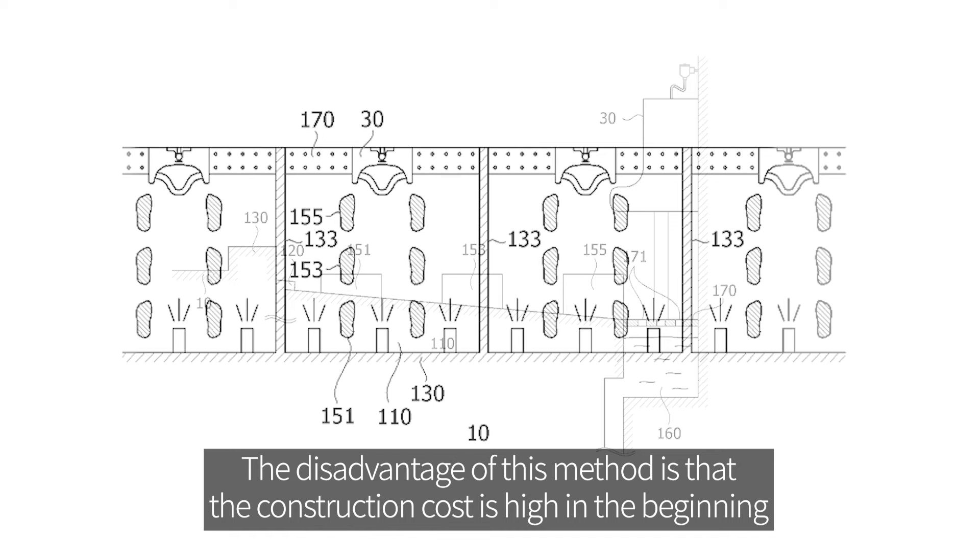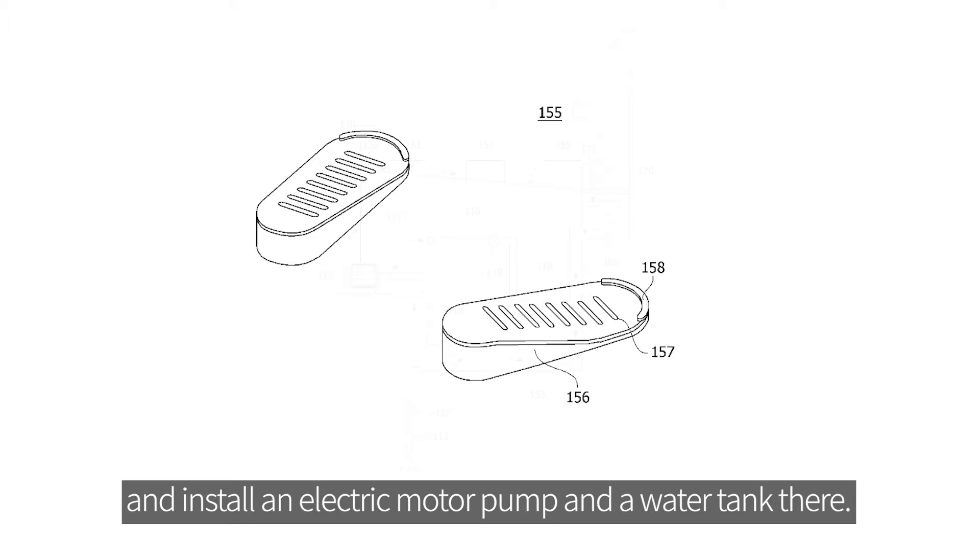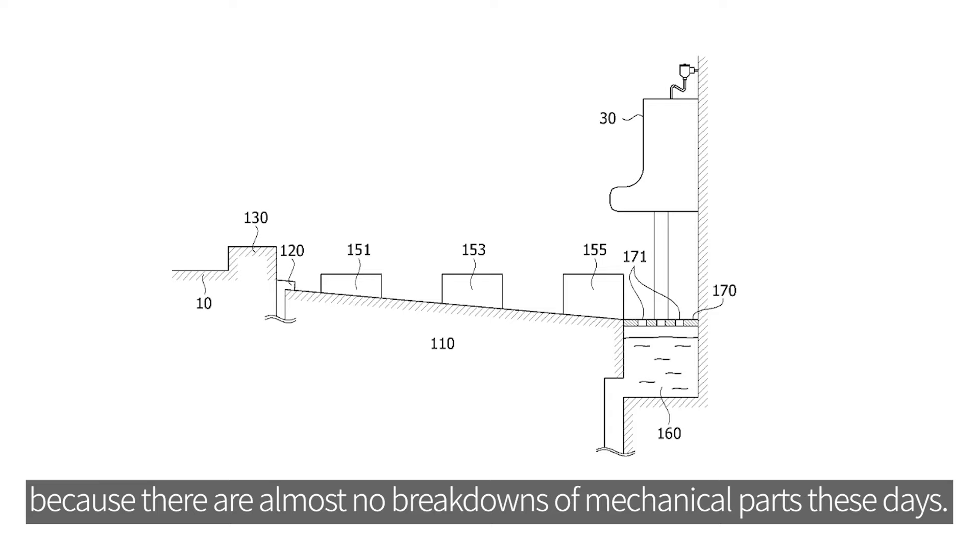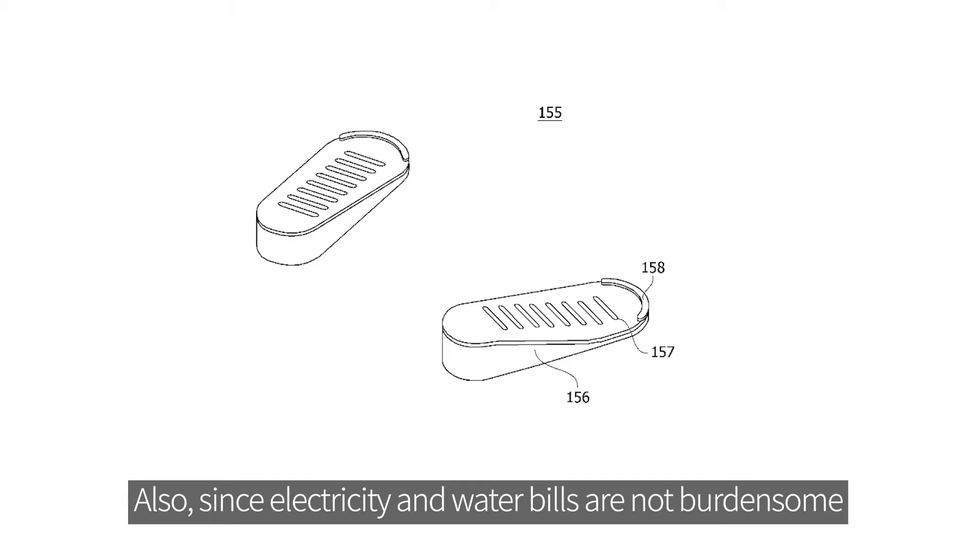The disadvantage of this method is that the construction cost is high in the beginning because it is necessary to dig up the bathroom floor and install an electric motor pump and a water tank there. The advantage of this method is that there is no need to worry about the additional cost due to frequent failures after installation because there are almost no breakdowns of mechanical parts these days.